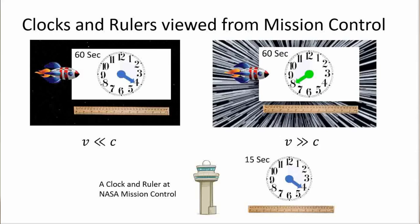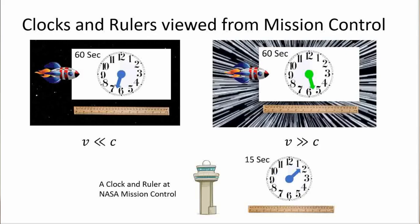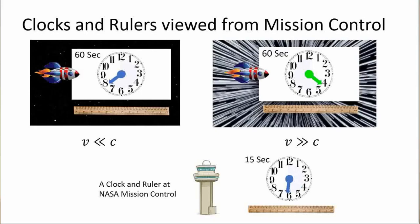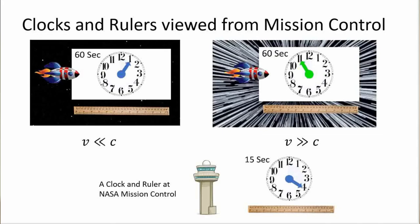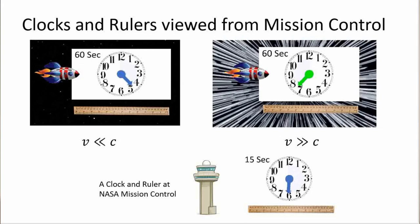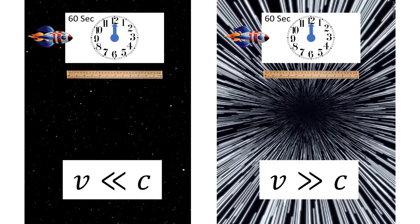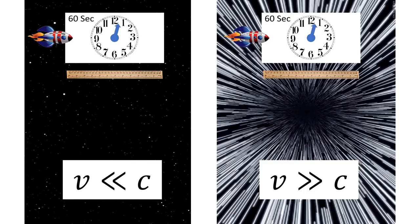The animation on the left shows a spacecraft traveling at nearly but less than the speed of light — you can see its clock running much slower than the one at mission control. Interestingly, when a stationary observer at mission control observes a clock on board a spacecraft traveling faster than the speed of light, their perception of that clock is reversed — it appears as though the clock is running backwards.